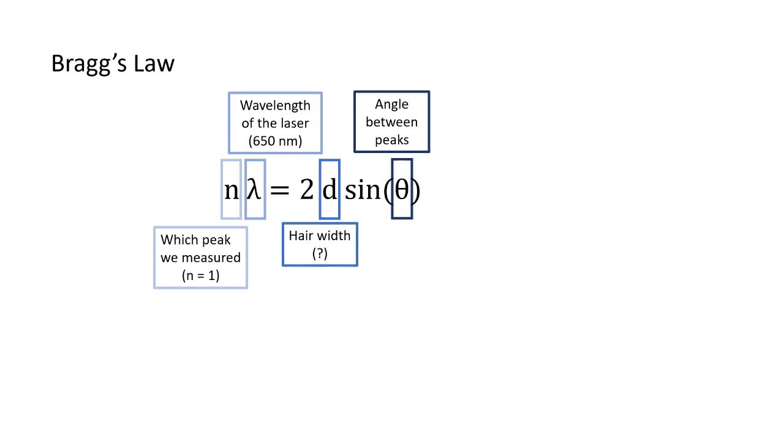Thinking back to our laser setup, we had the wall on the left and the ring stand with the hair on the right, and we measured the distance, big D, between the wall and the ring stand. We also measured the distance between peaks in the diffraction pattern. Let's call this value A. If we were to draw a line between where the laser hit the hair and where the laser hit the wall for the two peaks, it would look like a triangle.